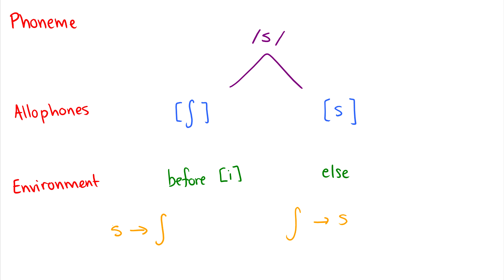But when we consider the fact that we have to write a rule for the environment, which environment is easy to capture in a rule? Before i or everywhere else? It's pretty easy to write an environment for before i, but it's not so easy to write an environment for everywhere else. So that's why we take the elsewhere condition as the main phoneme, and then these allophones are rules taking from phoneme to the allophones.